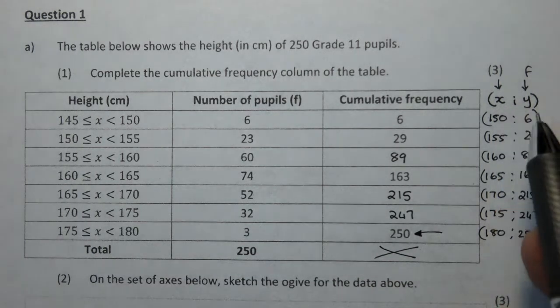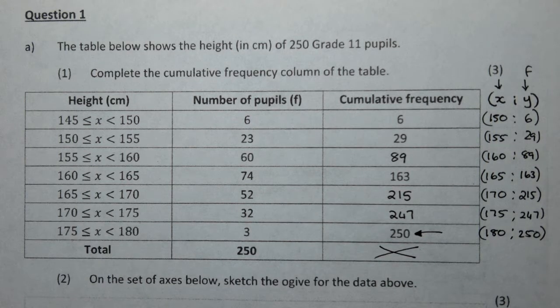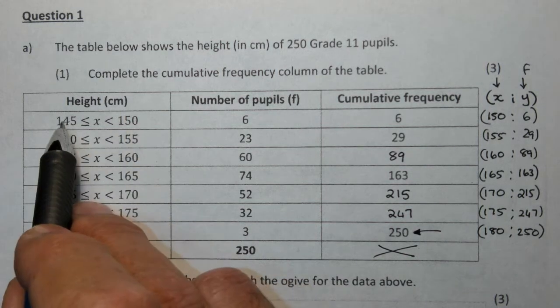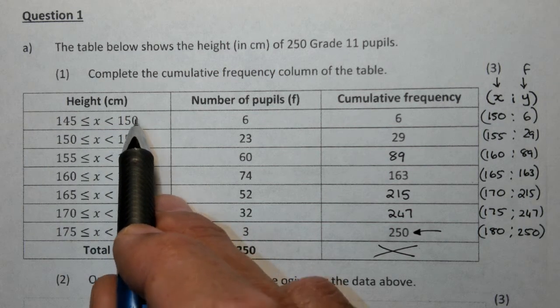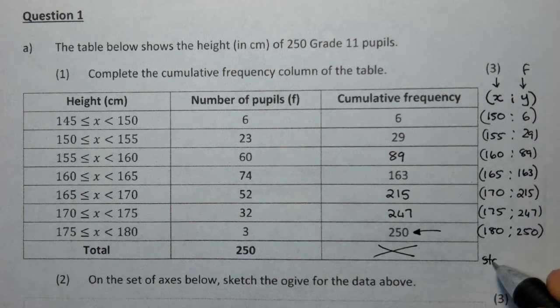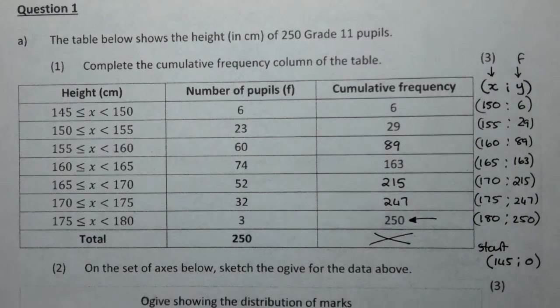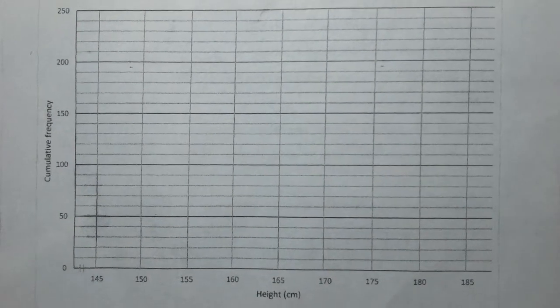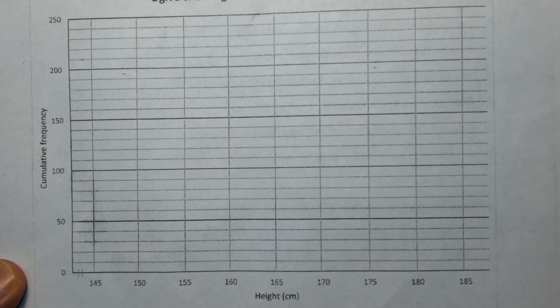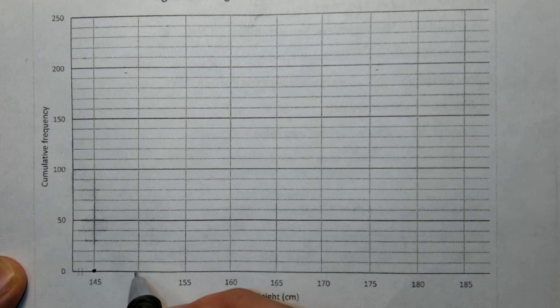Very important is the point where your ogive is going to start. You need to anchor this ogive at the lower limit. If you look carefully, these increase by 5, and if you decrease to the previous interval, your ogive will start at the point 145 and anchored on the x-axis at 0. So we are now requested to draw the diagram, the ogive curve, for 3 marks.